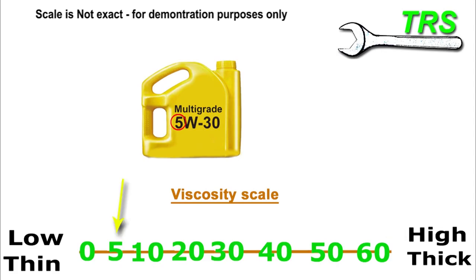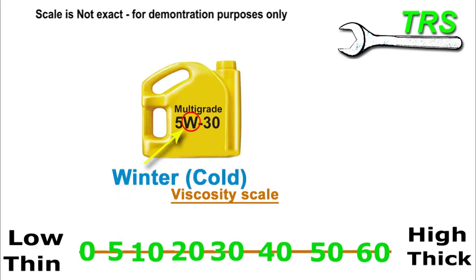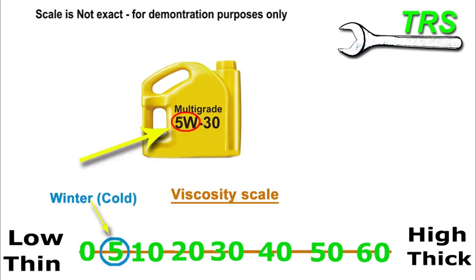So what this 5 is saying is that this oil has a viscosity of 5 — that's the base of the oil, that's what the oil actually is. What the W stands for generally is winter, or cold. This oil does have a viscosity of 5, but when it's cold.